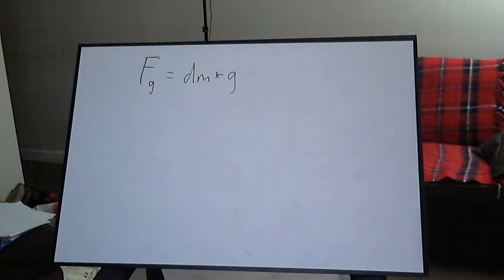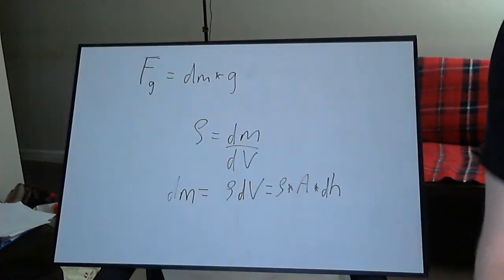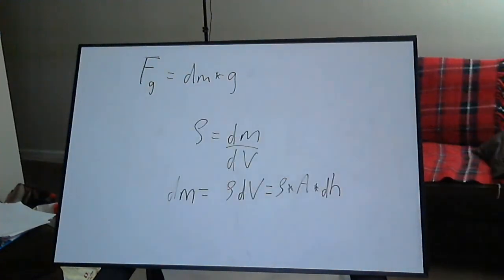Weight, the force of gravity on our sample volume is of course going to be the differential mass times g. To get the differential mass in terms of variables that will be useful for us, consider that density, designated by Greek letter rho, is defined as mass over volume. In this case, the differential mass over the differential volume.